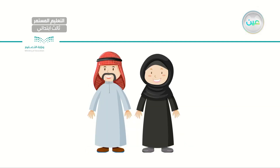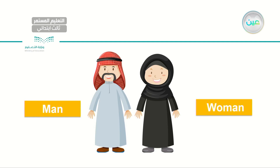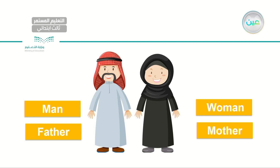How about this one? Here I have a man — what's the opposite to this noun? Woman. Very good. So I have a man and I have a woman. Or he could be a father, so the opposite is mother. Let's read together: man, woman, father, mother. Very good.